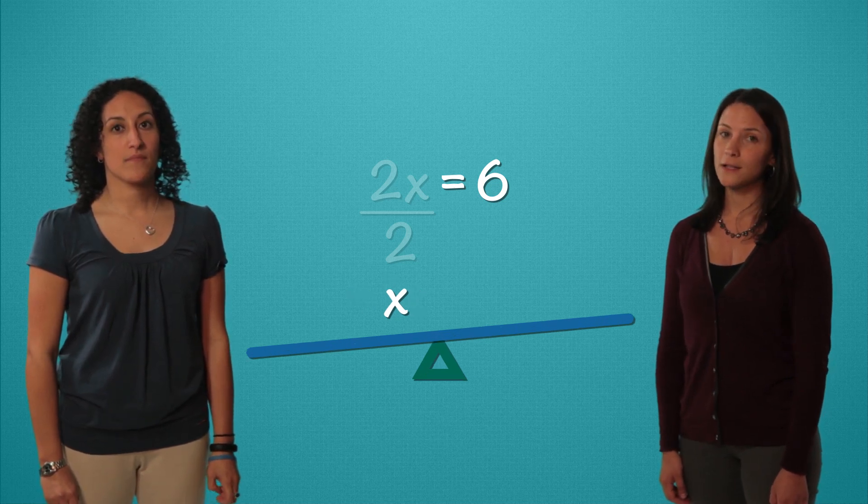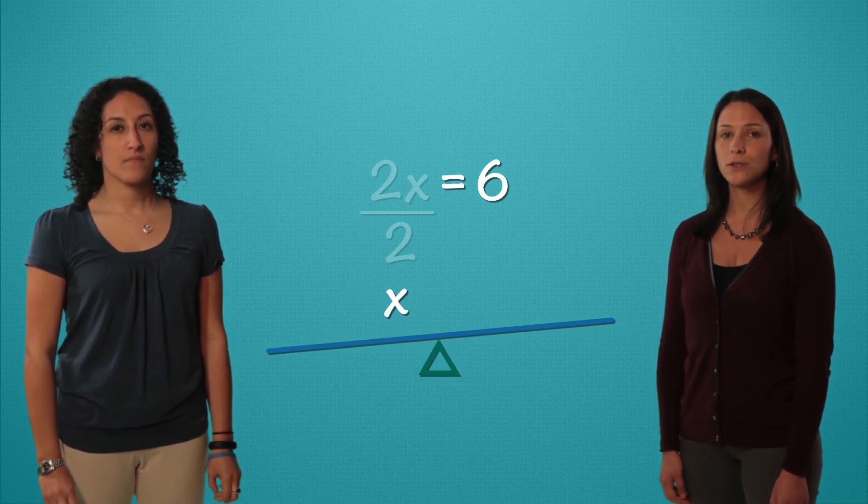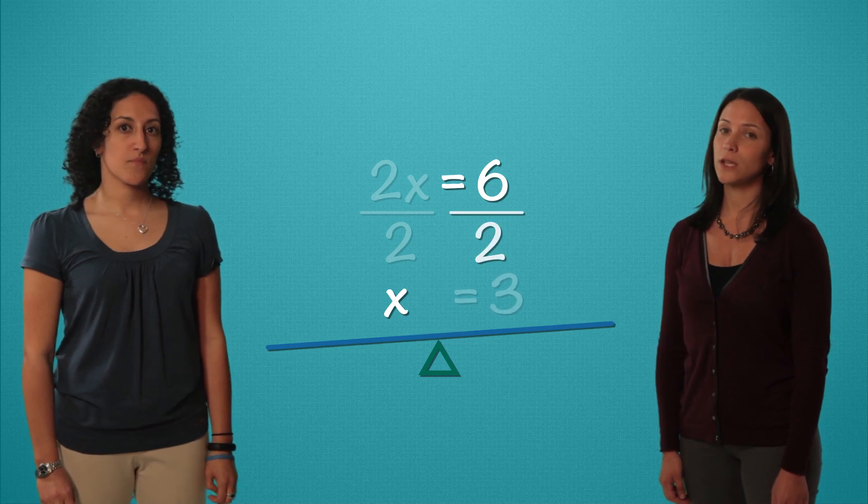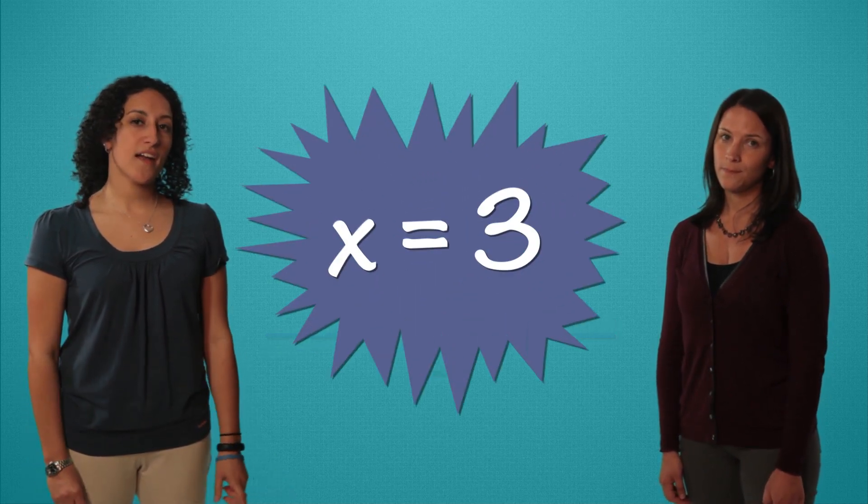But remember our balance. What we do to one side we have to do to the other. 6 divided by 2 equals 3. And there we go. x is equal to 3.